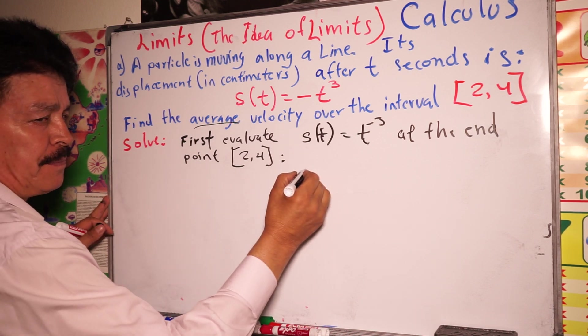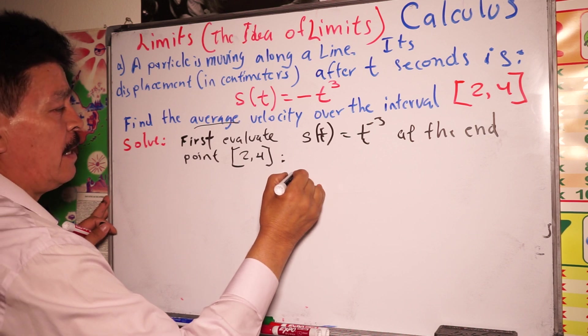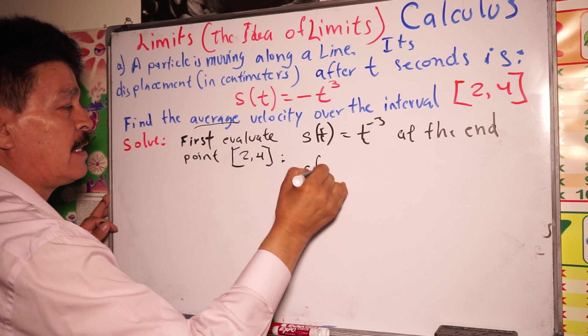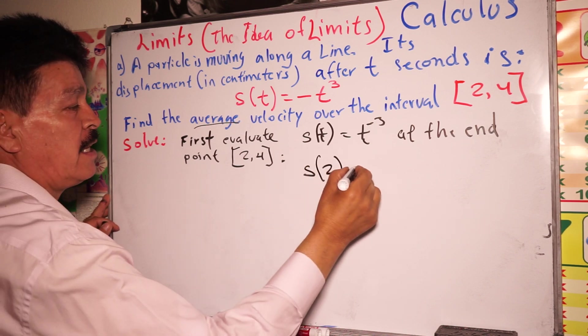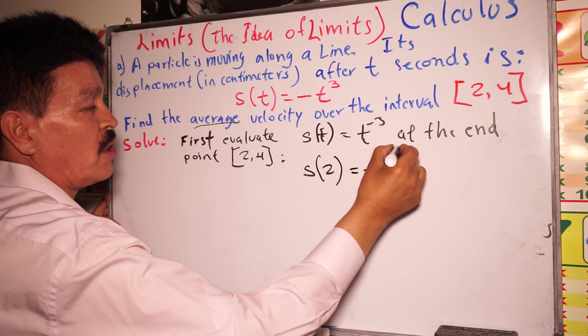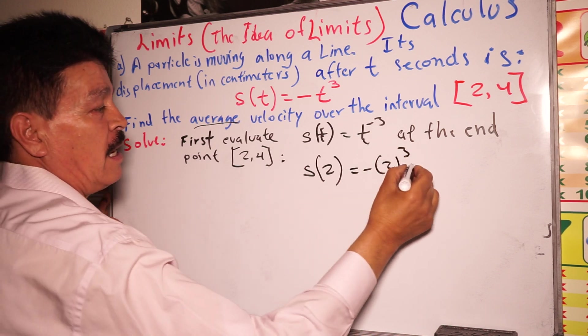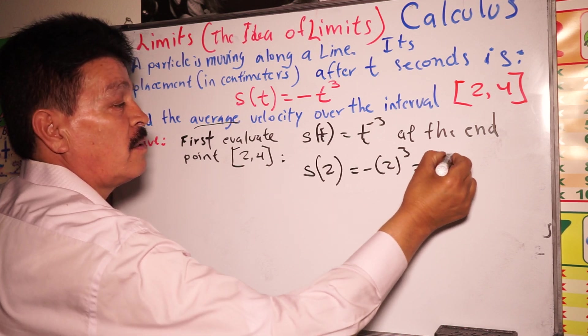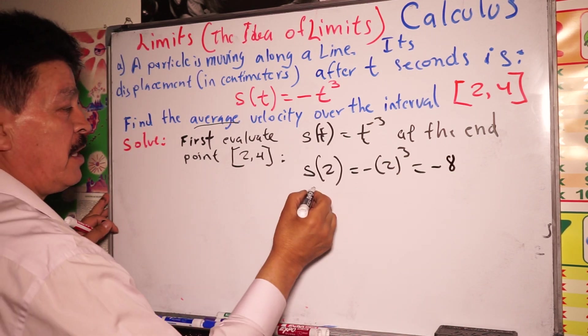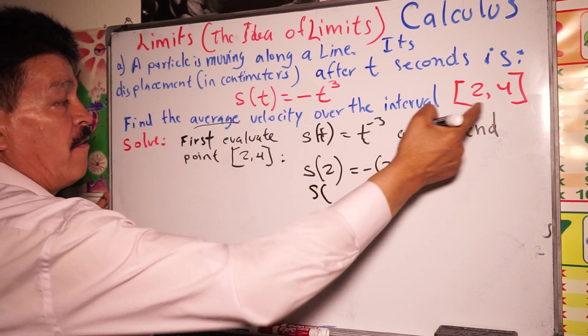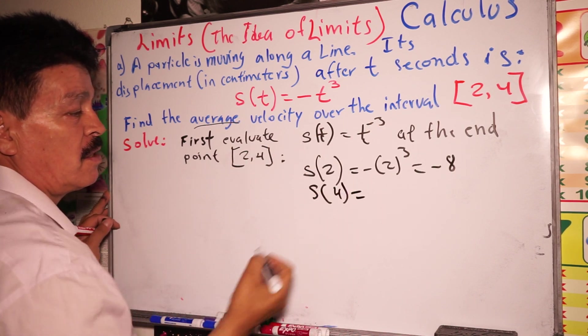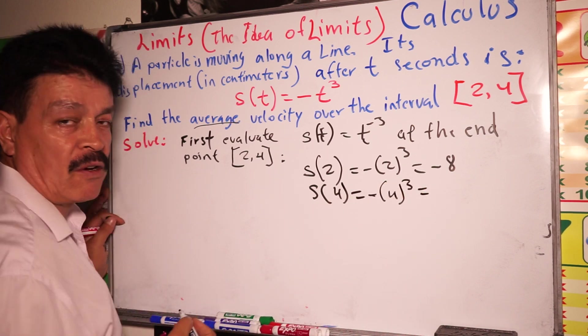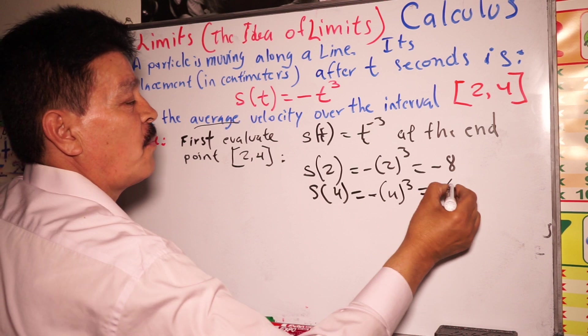So s(2) equals negative two to the third power. What is the answer here? It's going to be negative eight. Now s(4) equals negative four to the third power. This equals negative sixty-four.